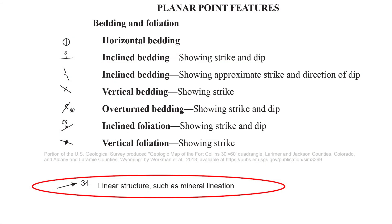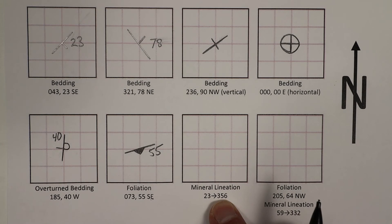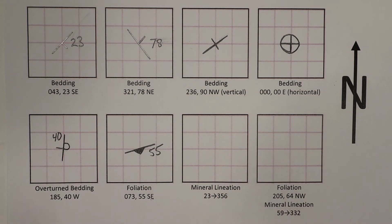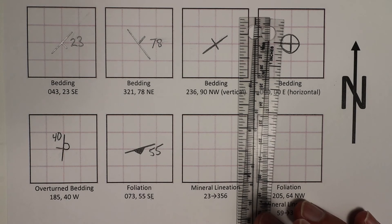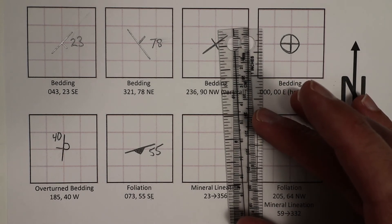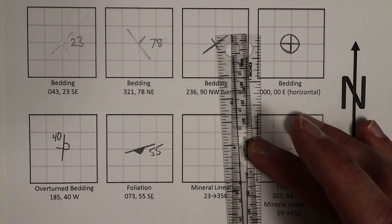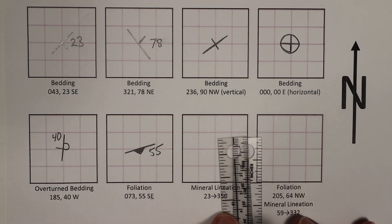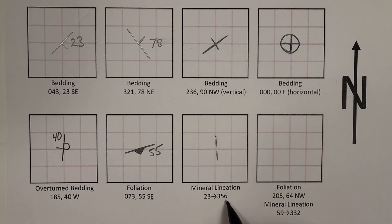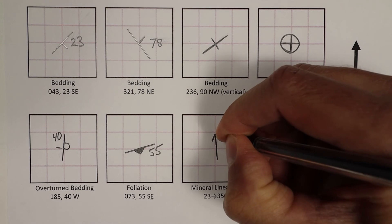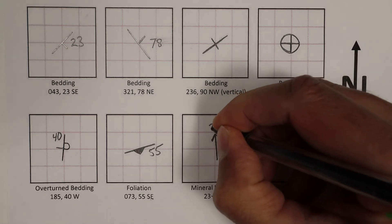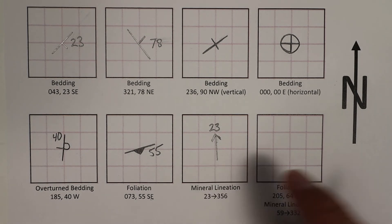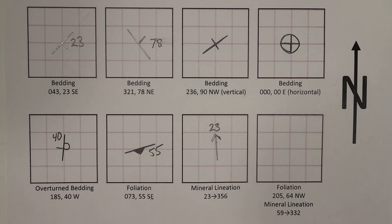Mineral lineation is a linear structure. 356 is the trend. The first step of drawing a line at the compass direction — analogous to strike in planar structures — is done the same way. That is only 4 degrees counterclockwise from due north 360. I draw that 4 degrees counterclockwise, then draw the arrow for the structure toward 356. Then I write in the plunge, typically at the tip of the arrow. That symbol represents the orientation: plunge 23 toward trend 356.